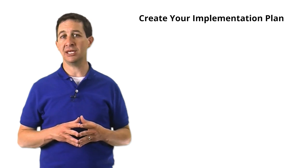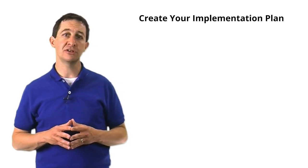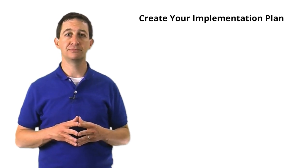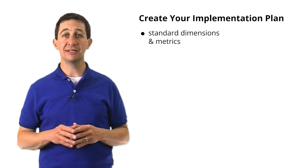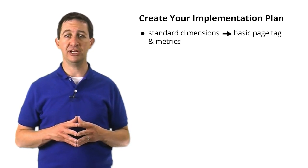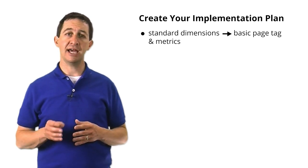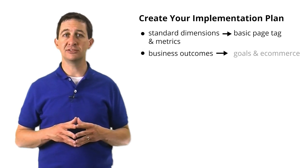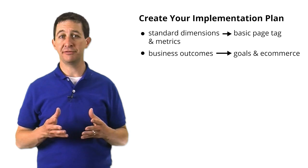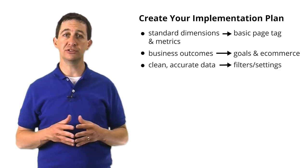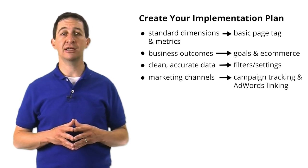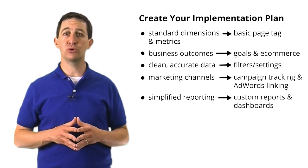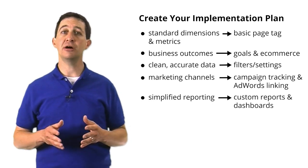Once you know both the business requirements and details about your technical environment, the next step is to create a basic implementation plan. In this plan, you will document the features of your analysis tool that you'll use to capture the data you need. Let's review a few of the most common features used in a Google Analytics implementation plan for a website. First, to get any data, you need to implement the standard Google Analytics page tag — this gives you the bulk of the data you'll need. Next, you need a way to track KPIs using goal tracking or the e-commerce module. Another feature you may want to use is filters, which normalize your data so that your reports are more accurate and useful. To properly track marketing campaigns, you should use campaign tracking and AdWords linking. Finally, you can use custom dashboards and custom reports to simplify the reporting process and save a lot of time.